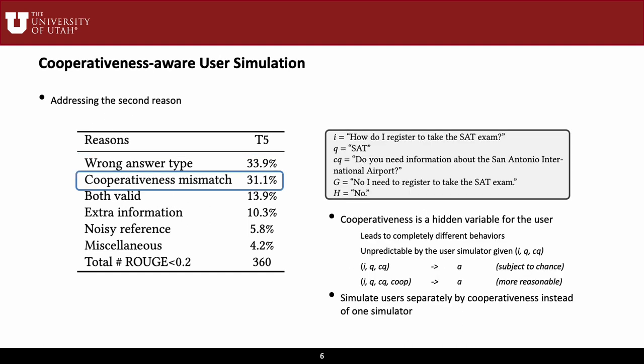The second most common reason is the cooperativeness mismatch. Sometimes humans tend to answer the question with minimal effort, while the simulator provides more information, and vice versa. We observed that human cooperativeness tends to be random in the dataset. Therefore, given the current input, it is unreasonable to require the simulator to predict the cooperativeness itself.